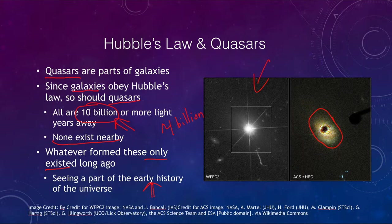Here is an example: when we take an image of one of these quasars and look more closely, if we blot out the quasar light we can actually see that there is a galaxy around it as well — just much too faint to normally be seen. This is the core of the galaxy. If the core of the galaxy is receding at such a speed, then so will the entire galaxy.